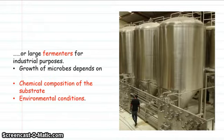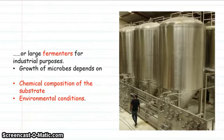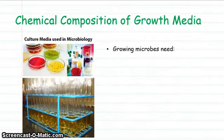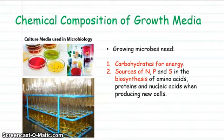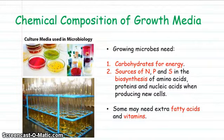The growth of the microbes depends on the chemical composition of the substrate and the environmental conditions in which those microbes are grown inside the fermenters. Looking at the chemical composition of growth media, all microbes are going to require carbohydrates for energy and respiration, and sources of nitrogen, phosphorus, and sulfur in order to produce amino acids, proteins, and nucleic acids when the cells divide. Some may also require fatty acids and vitamins.